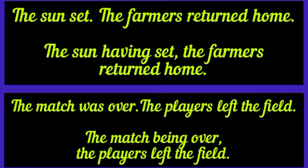We have another pair of sentences: the match was over — this is the first. The players left the field. Here the first sentence will be replaced with an absolute participle because both sentences have different subjects — the match in the first sentence, the players in the second. The match being over — here being is the absolute participle replacing the first sentence. The match being over, the players left the field.